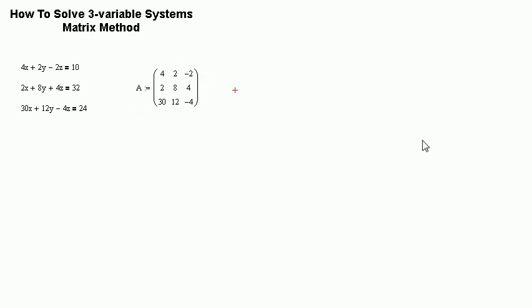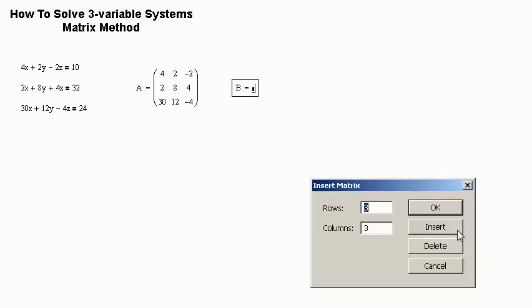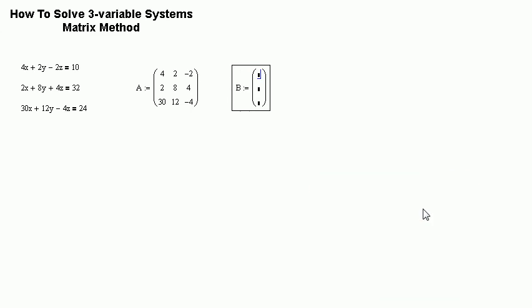Okay. The next matrix is B. It is made up of the three constants that are on the right sides of the equal sign. It is a one-column, three-row matrix. The first number is 10, 32, and 24.